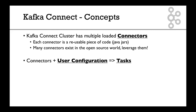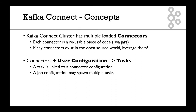Now, when you have these connectors — these jars — and you add your own user configuration, this gives you tasks. A task is definitely linked to a connector configuration, and a job configuration may create multiple tasks. So say you take one connector and add one configuration, you may end up with two or three tasks.